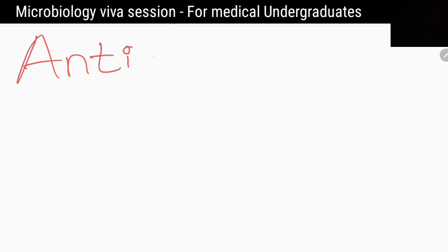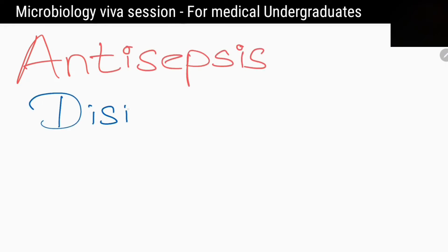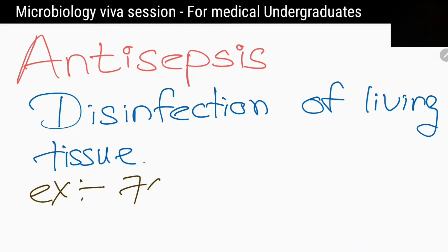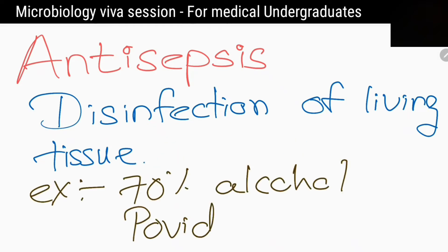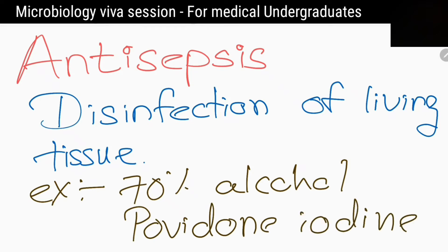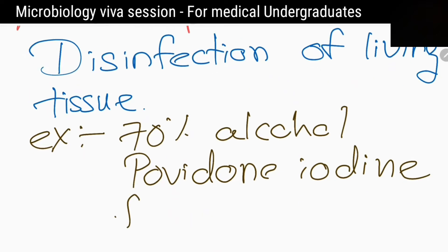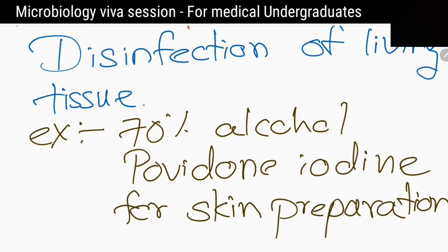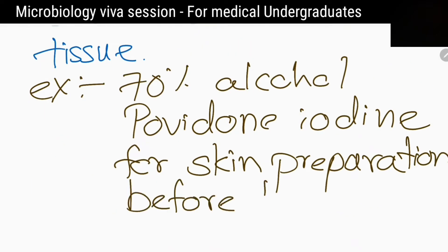What is antisepsis? Give me an example. Antisepsis is disinfection of living tissues. As an example, 70% alcohol and povidone iodine for skin preparation before lumbar puncture.